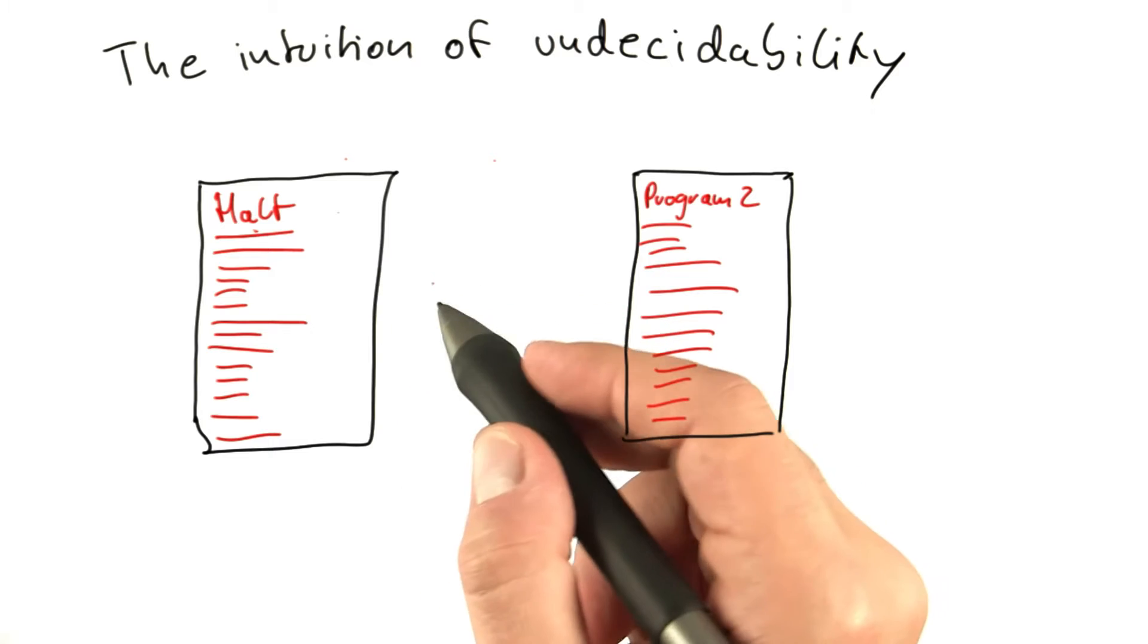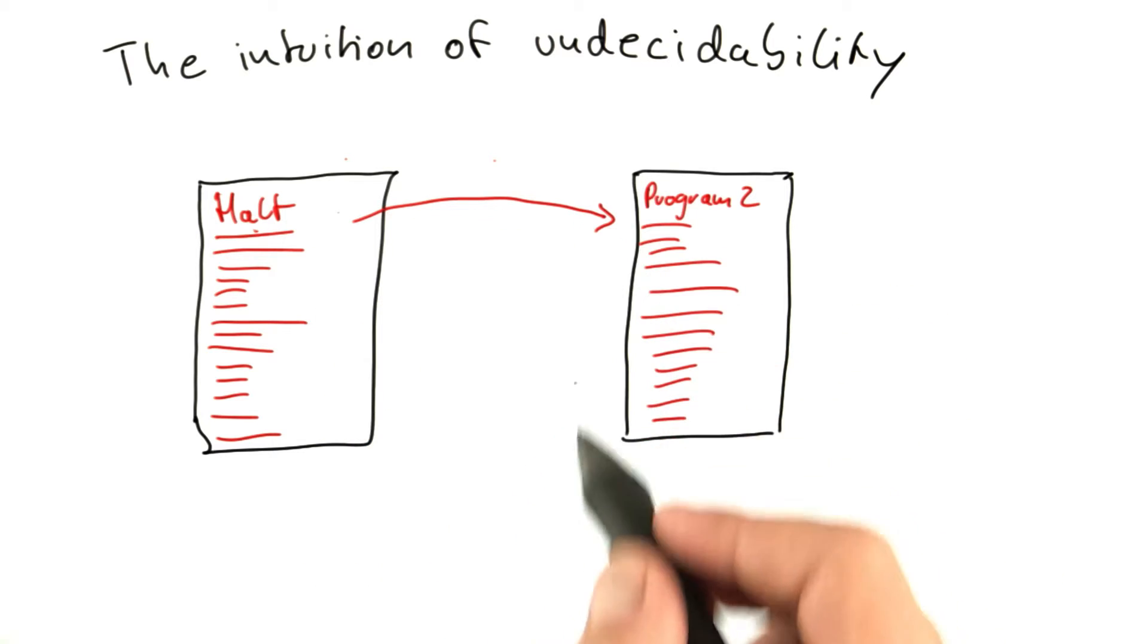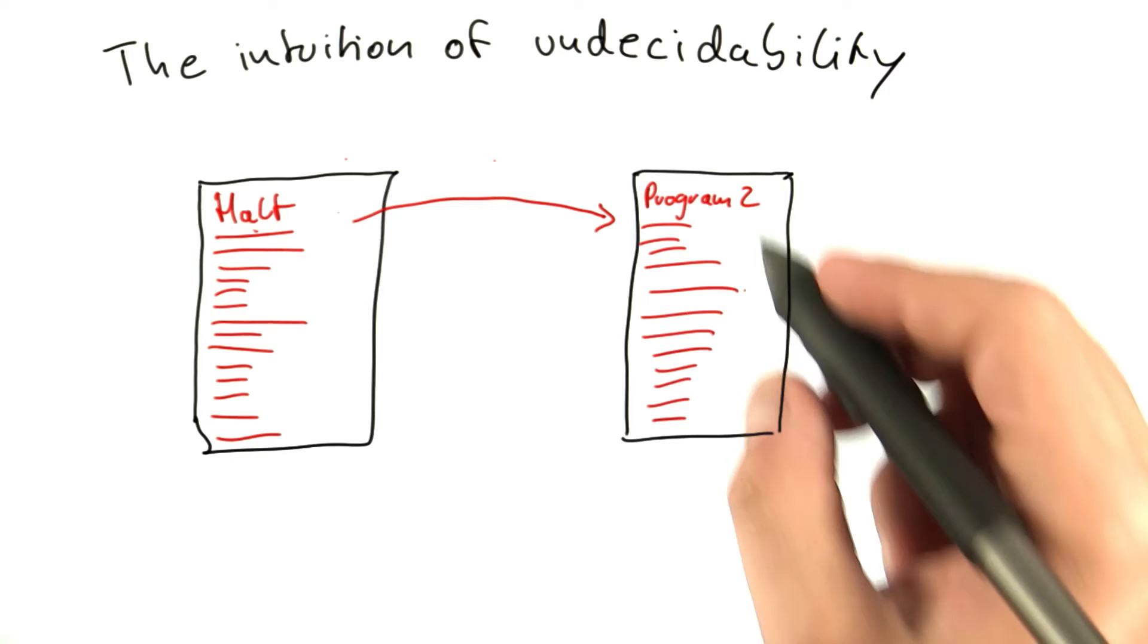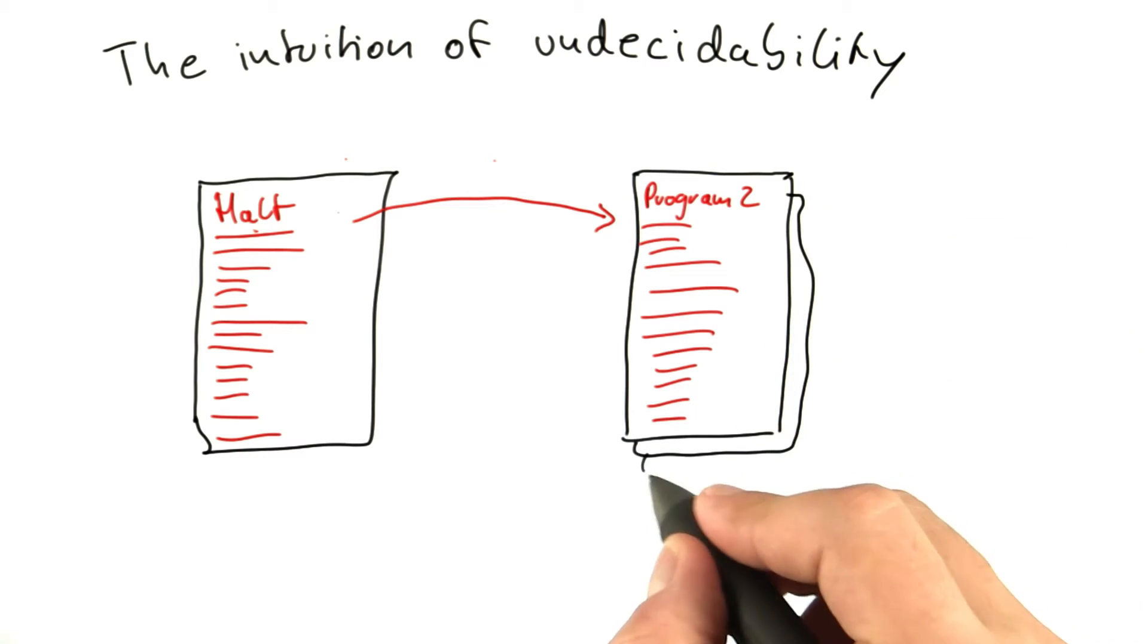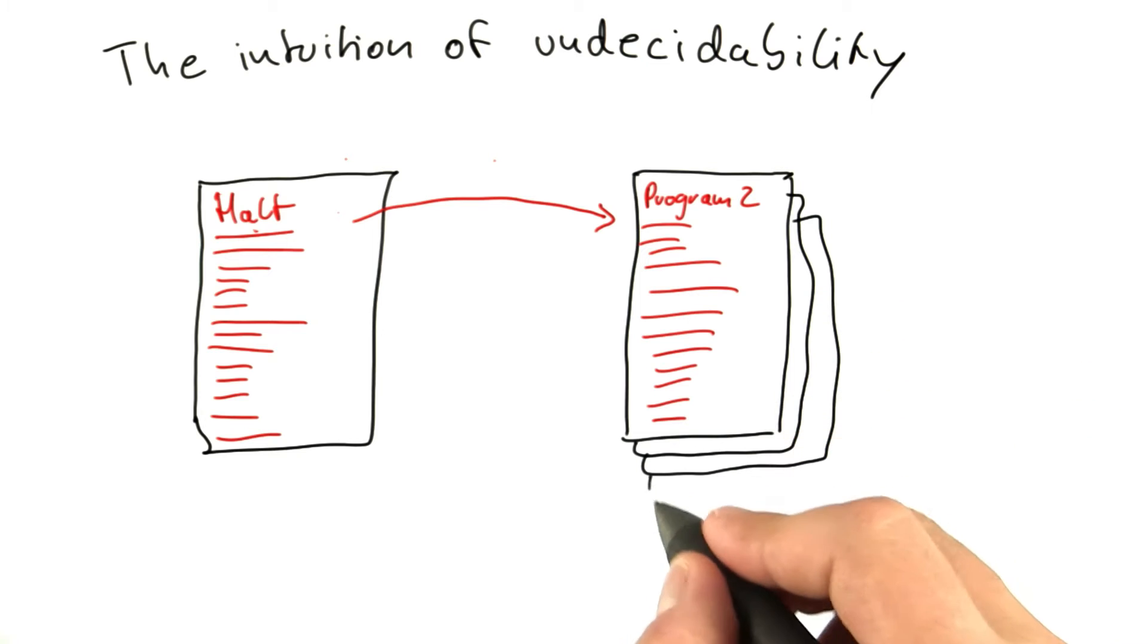The difficulty lies in the fact that HALT is required not only to be able to say what one given program, program 2, does—and of course we'll assume there's also an input—but basically it's supposed to be able to say this for an infinite number of programs.